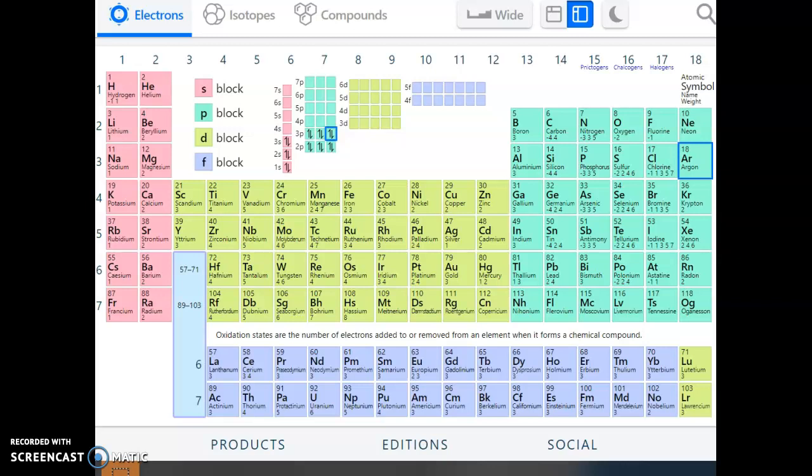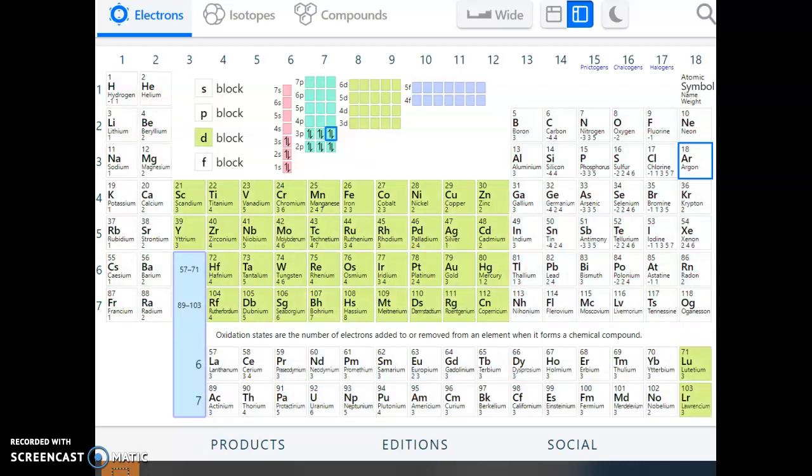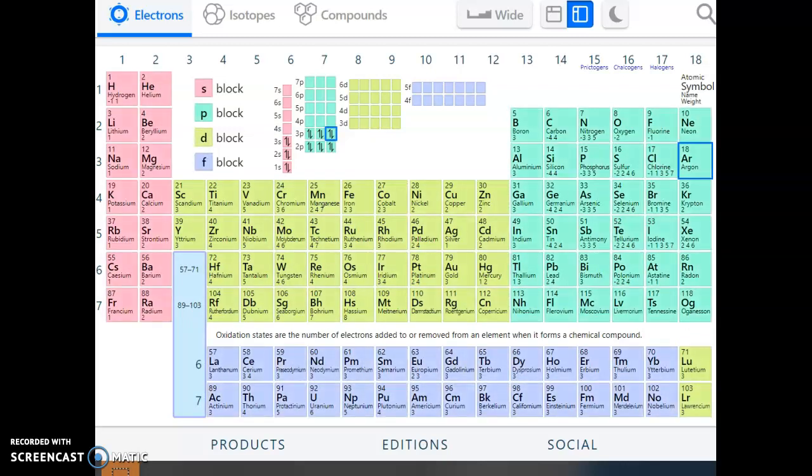And so far, it's matching up with everything we've been saying. The center block here, so the transition metals, are what are known as the D-block elements. So, if you'll notice here, there are 1, 2, 3, 4, 5, 6, 7, 8, 9, 10 columns in this block.